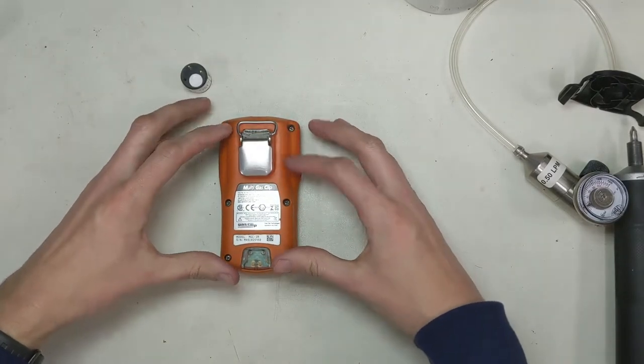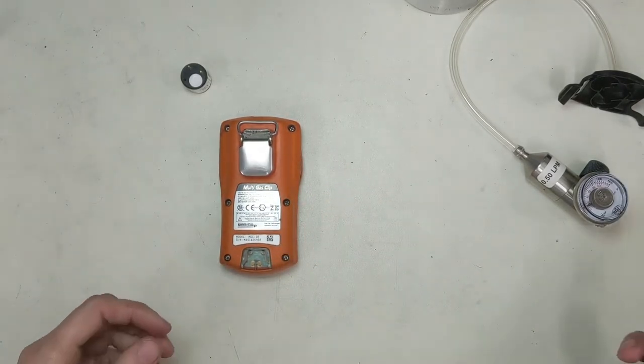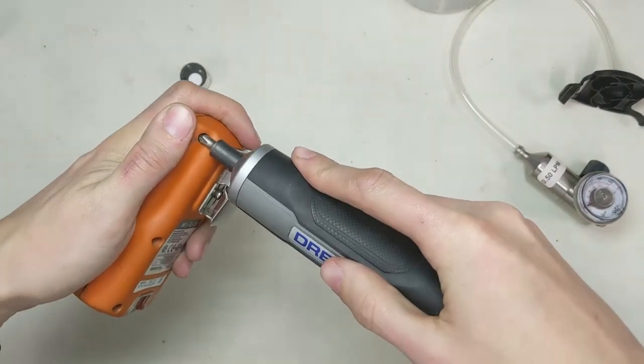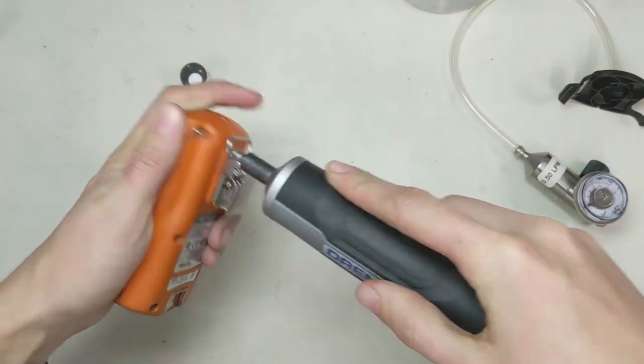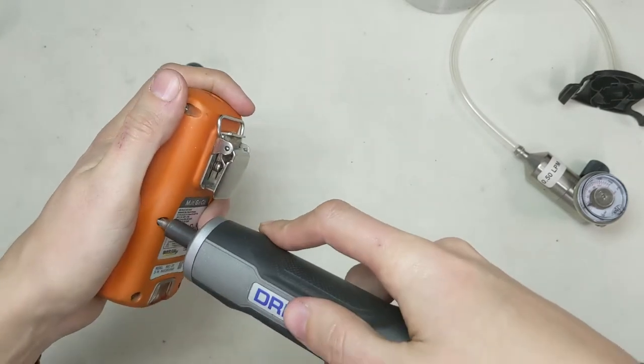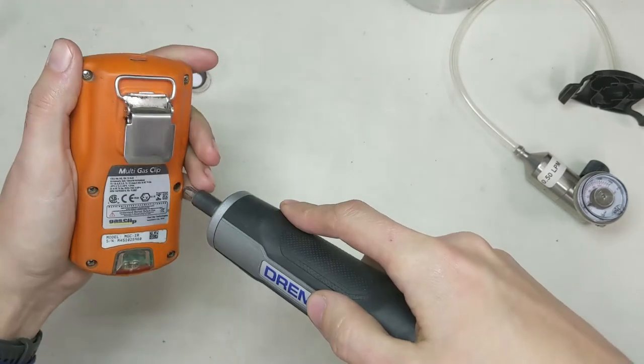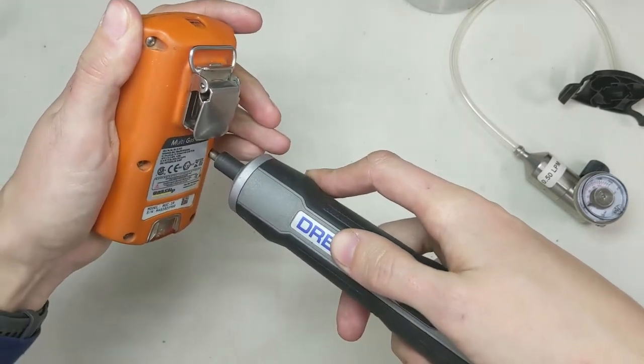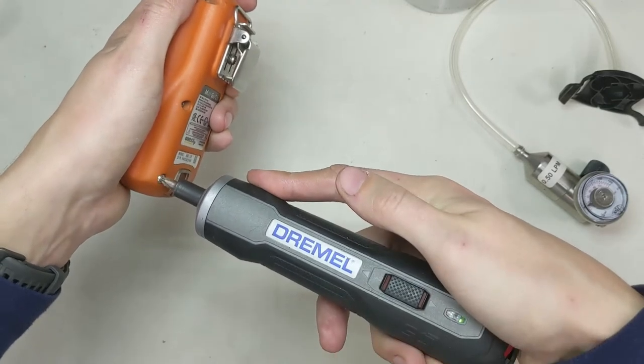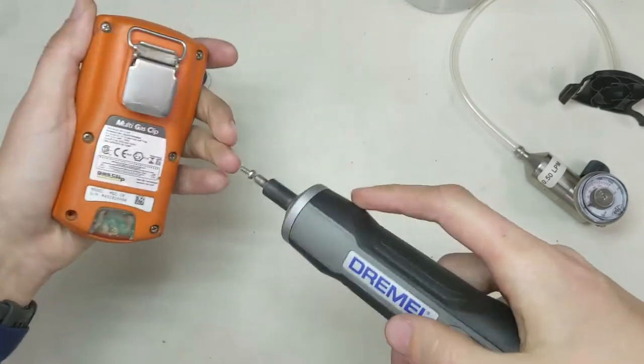So first things first, we're going to take out these six screws in the back. I'm going to use an electronic screwdriver to get them out. I'm not supposed to use one of these to put them back in, but to get them out, it's okay. Just make sure you don't strip anything. If you need a good screwdriver for working on electronics, by the way, I recommend this Dremel. I think it's phenomenal.